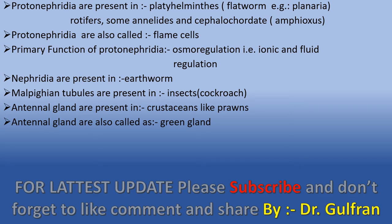About excretory organs in the animal kingdom: protonephridia are present in Platyhelminthes (flatworms), for example Planaria, rotifers, some annelids, and cephalochordates (Amphioxus). Protonephridia are also called flame cells, and the primary function of protonephridia is osmoregulation, that is ion and fluid regulation.